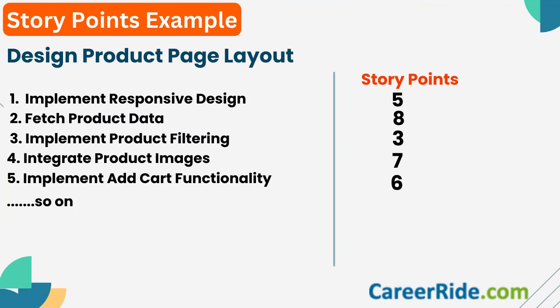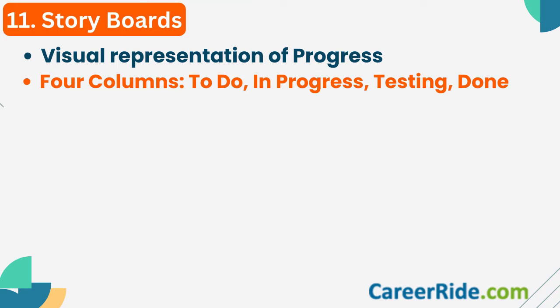For example, suppose your sprint is about building the product page for an e-commerce website. Your story points may cover tasks like implementing responsive design, fetching product data from the database, and implementing product filtering. Based on the effort required, you assign story points — for example, implementing responsive design might be assigned 5 story points. Story boards are a visual representation of a project's progress, shared transparently with the team. A story board generally has four columns: To Do, In Progress, Testing, and Done. Each task assigned in a sprint is listed under one of these categories.